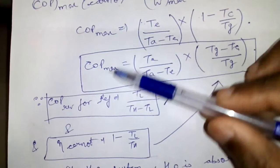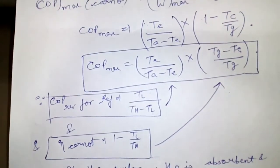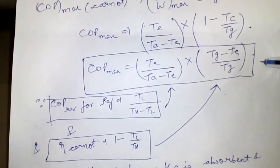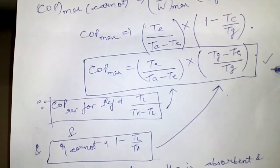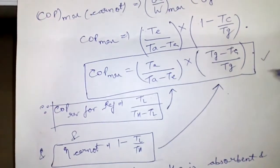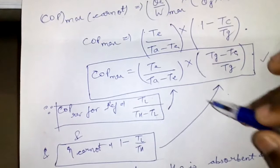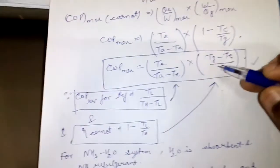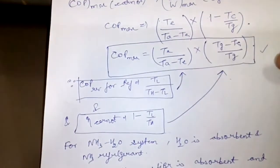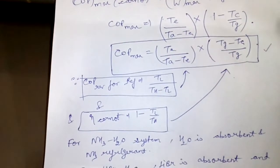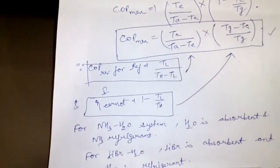So finally, COP maximum becomes TE upon TA minus TE into TG minus TC upon TG. This is the maximum COP formula and this derivation is most commonly asked. I have done it in the most simple way possible.